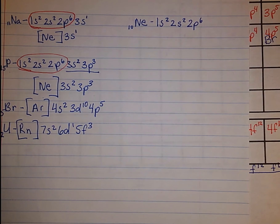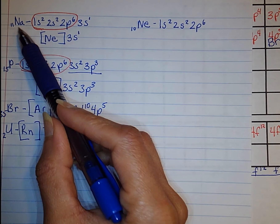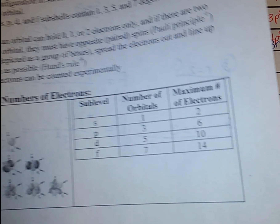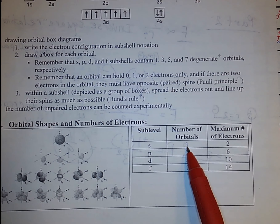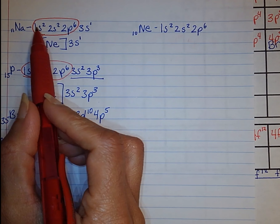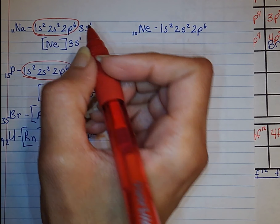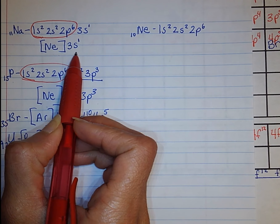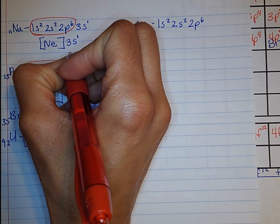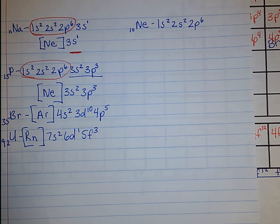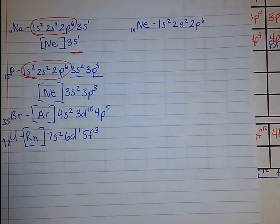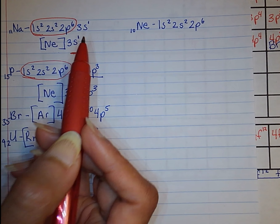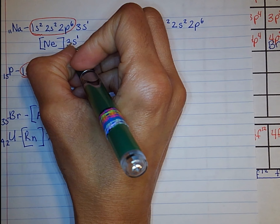Let's talk about orbital notation using sodium. When doing the orbital notation for sodium, we look at the electron configuration not replaced by neon — so whatever is remaining: 3s1. The s orbital only has one orientation, so we draw one line. In this case, the s orbital only has one electron, so we draw an arrow that is spinning up.